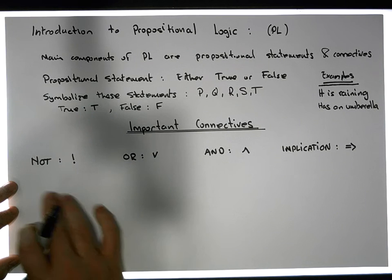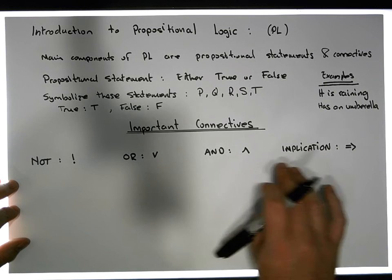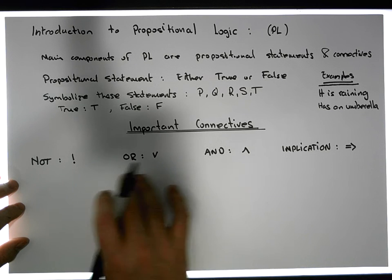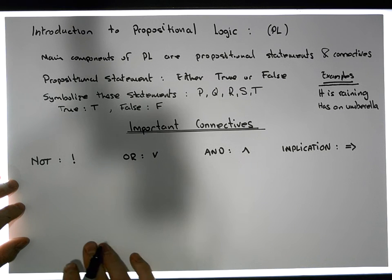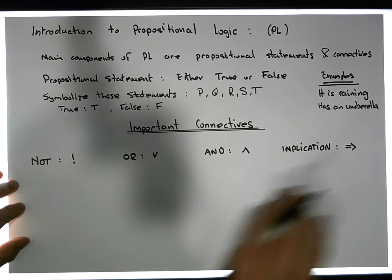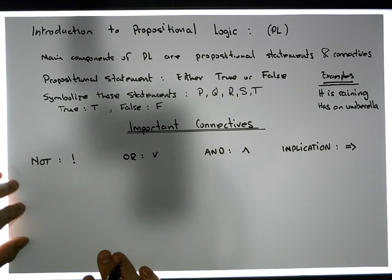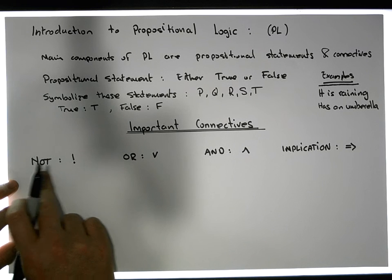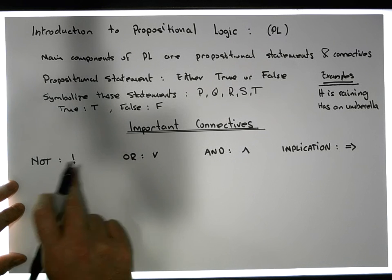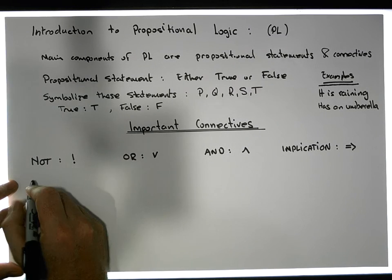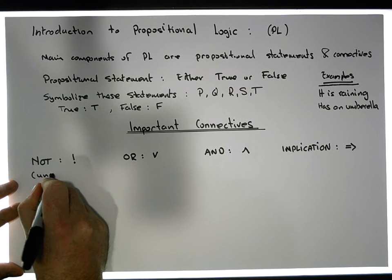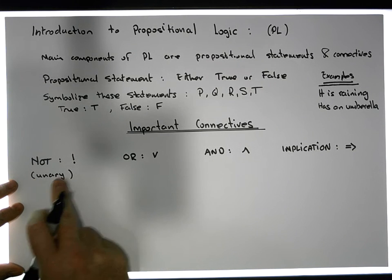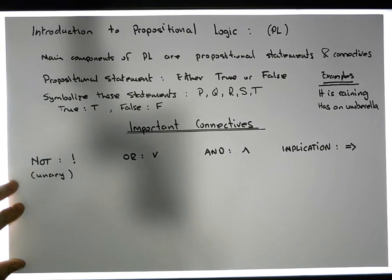But how do these connectives work? That's the real goal of this discussion. We have these four connectives and they have a particular structure — a syntax associated with them. The NOT connective, or the NOT operator, is what's known as a unary operator. It operates on a single proposition.